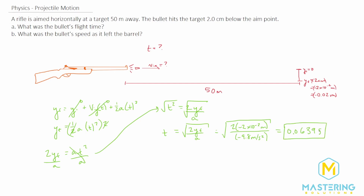Check how your question asks to round the answer. I'm going to leave it at 0.0639 seconds to avoid rounding error when calculating the bullet speed. In my experience, plugging in the longer answer to Mastering Physics lets it round for you, but your professor might have different settings. Put in whatever your question asks for — this is the time for the bullet in the air.